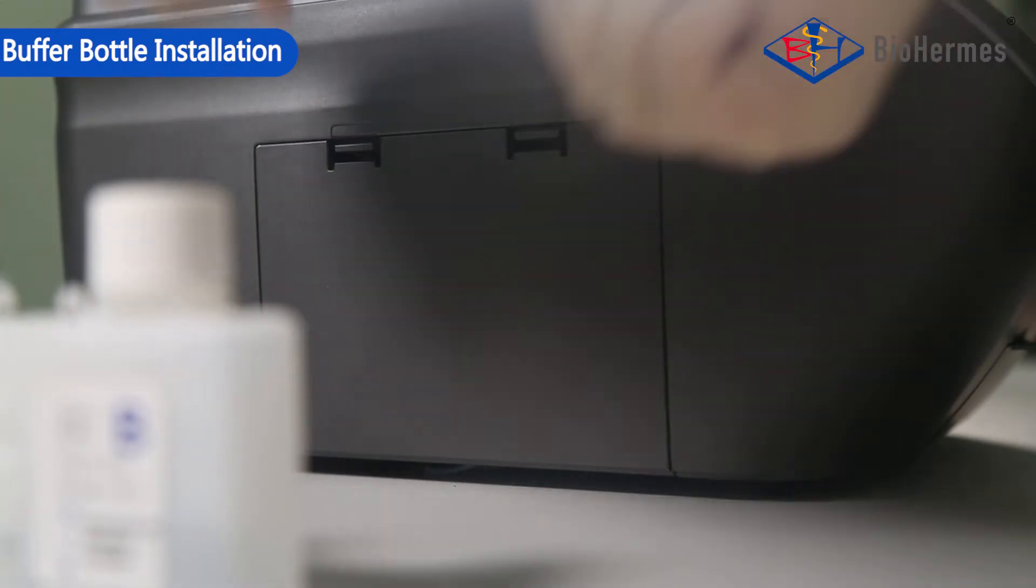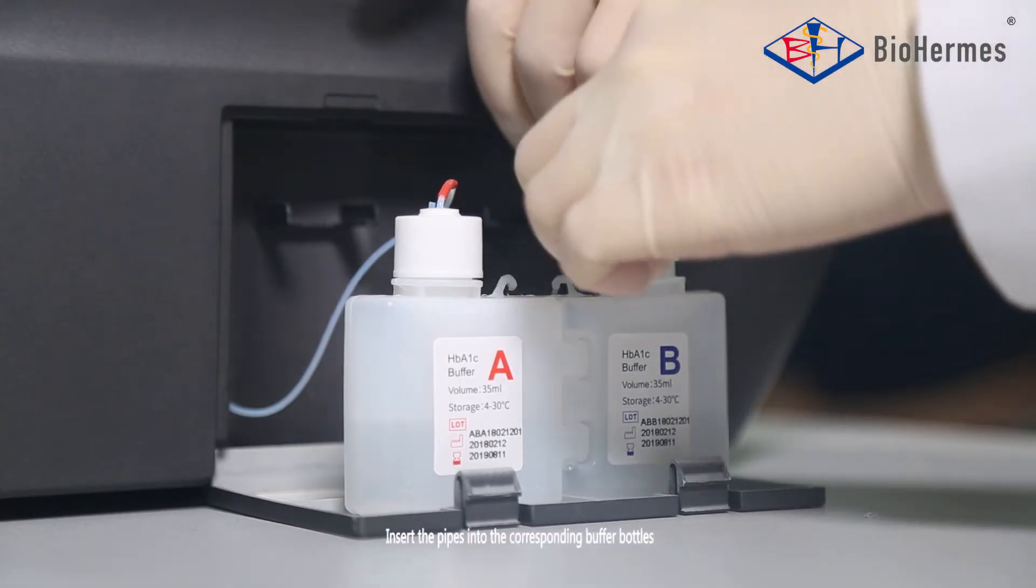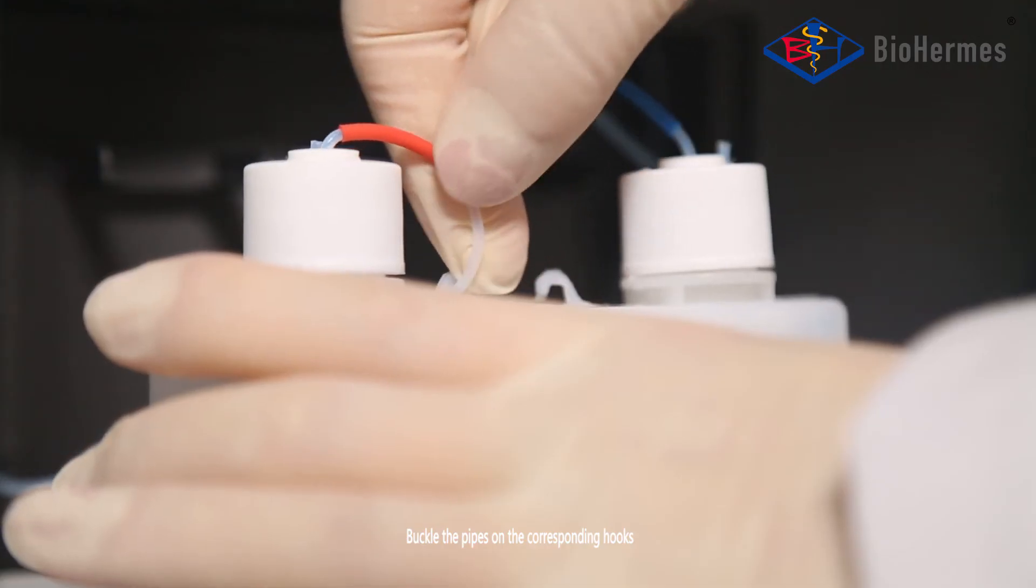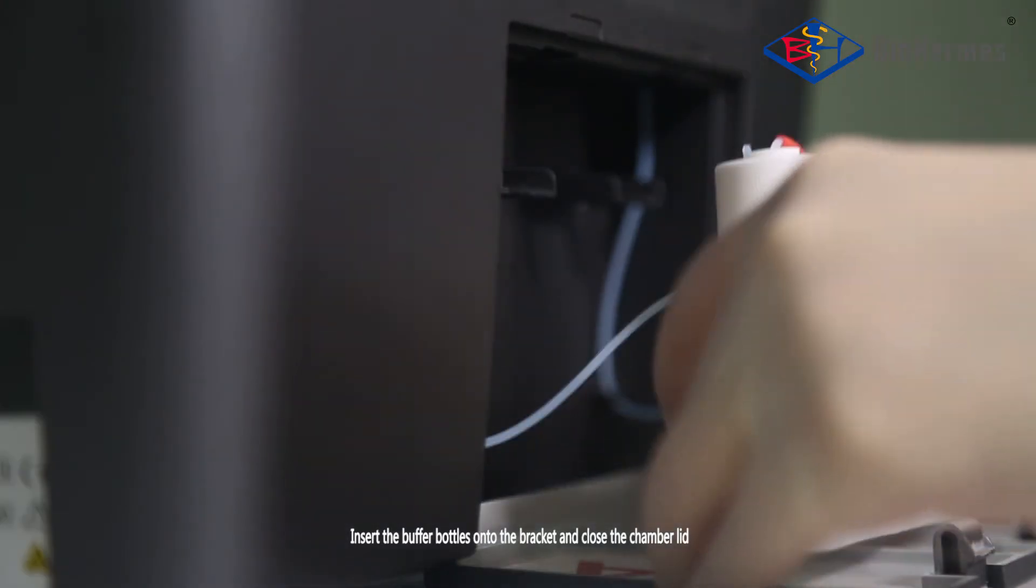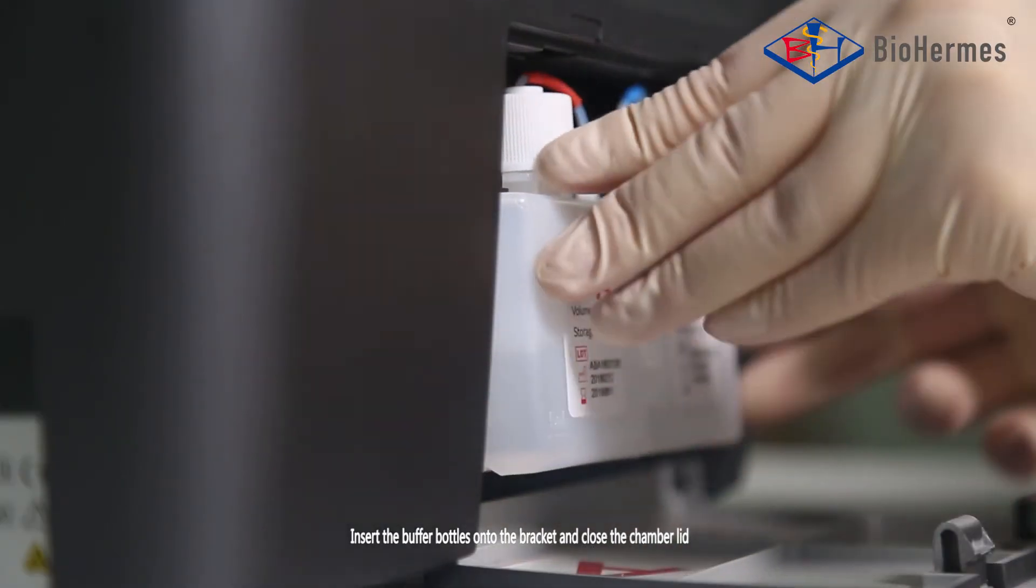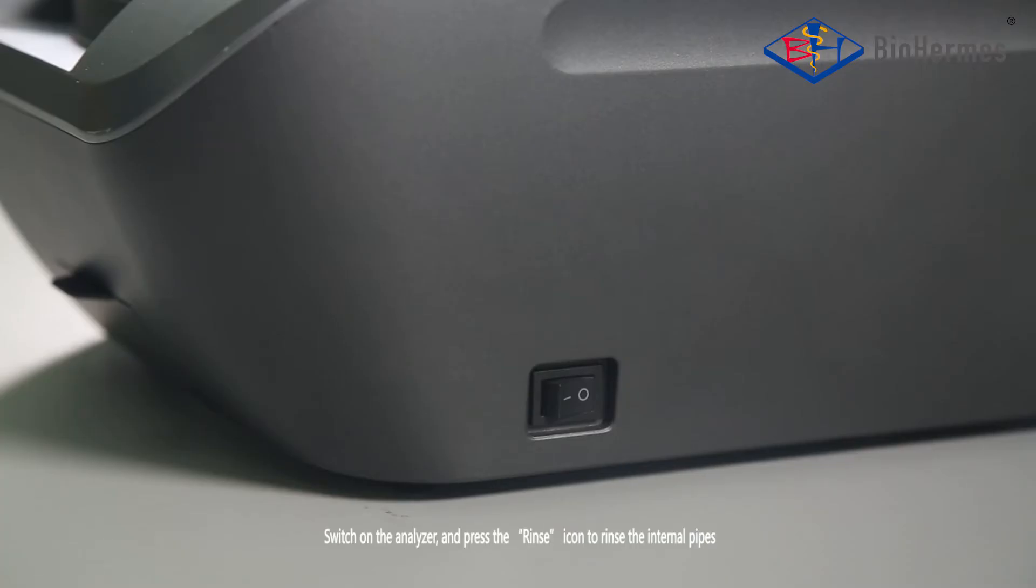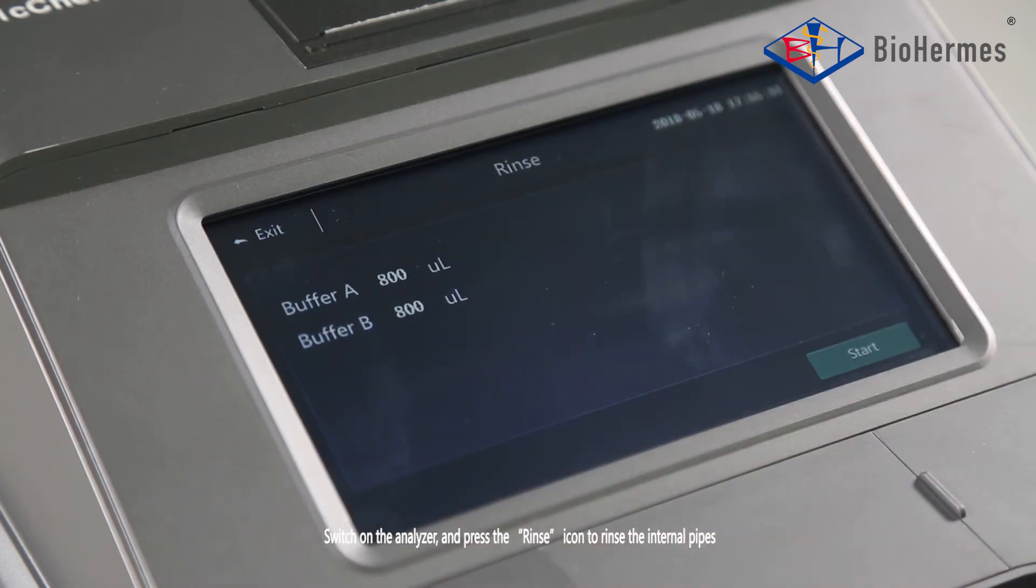Buffer bottle installation. Insert the pipes into the corresponding buffer bottles. Buckle the pipes on the corresponding hooks. Insert the buffer bottles onto the bracket and close the chamber lid. Switch on the analyzer and press the rinse icon to rinse the internal pipes.